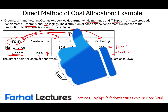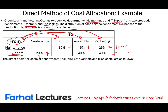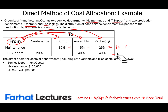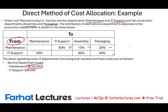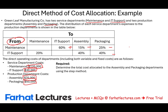The direct operating costs include both variable and fixed costs. The maintenance department has $120,000 to allocate; IT has $30,000. Production department costs are $70,000 for assembly and $50,000 for packaging. We need to determine the total allocated cost of the assembly and packaging departments using the step method.